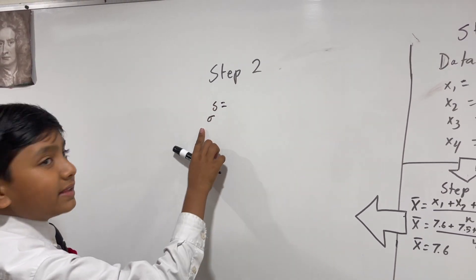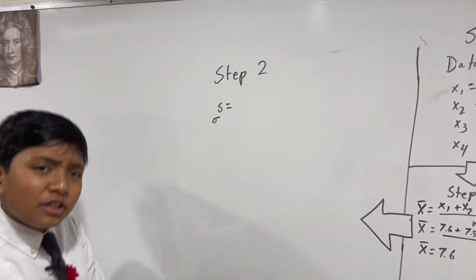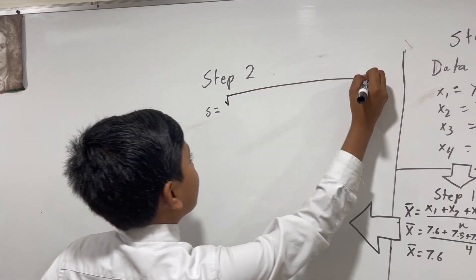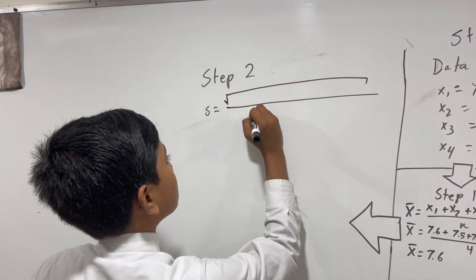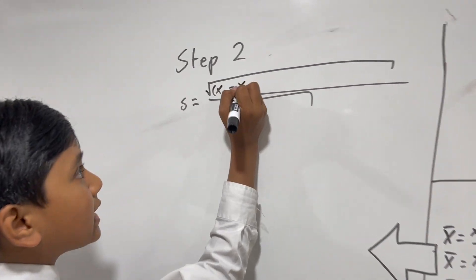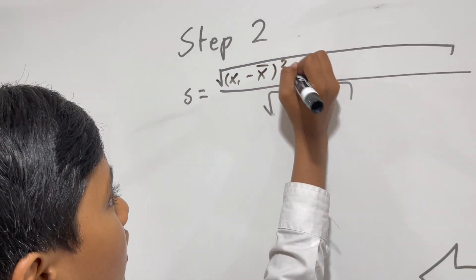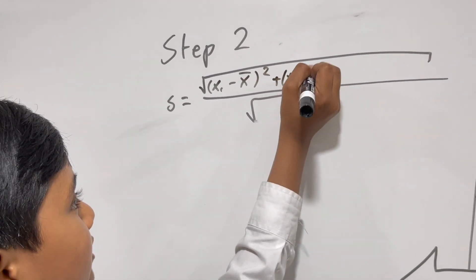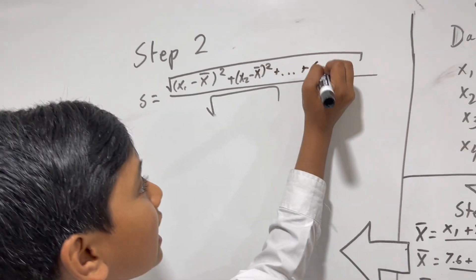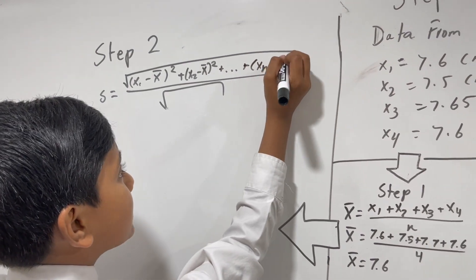So we're going to take s - in this case you might also see it written like this weird Greek symbol - and that's equal to the square root of (x1 minus x-bar) squared plus (x2 minus x-bar) squared plus (xn minus x-bar) squared, over n minus 1.